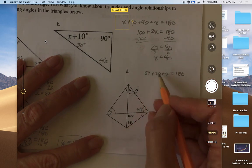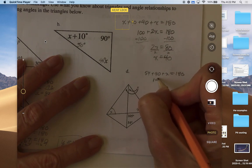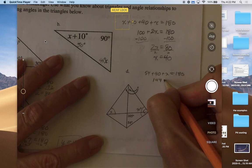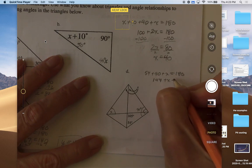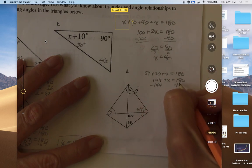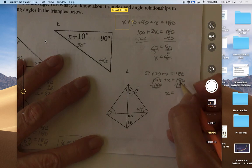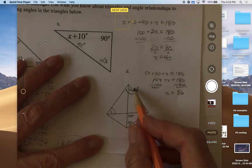If we add these two together, that would be 144 plus x equals 180. Subtracting 144 from both sides, this zeroes out, we only have x over here, and then that would be 36.